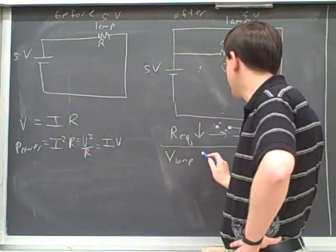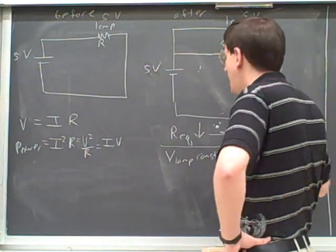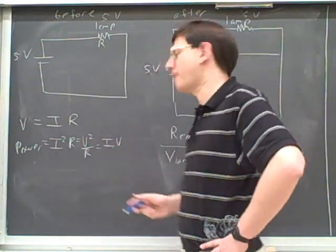So what's happened to the voltage on the lamp? It's constant. And now we can pick out one of these equations for the power in the lamp.